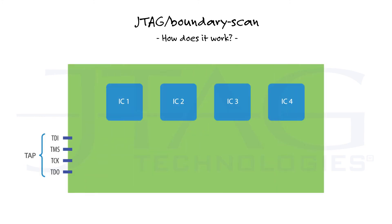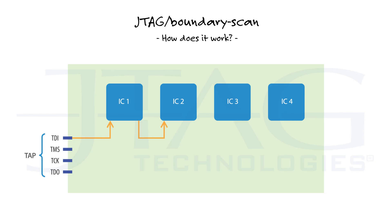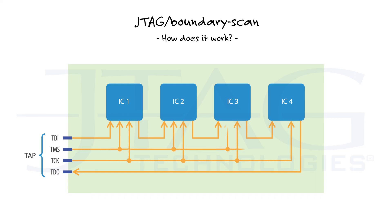Boundary scan registers of multiple devices on a board can be connected in series by connecting the TDO of one device to the TDI of the next device. TCK and TMS are connected to all devices in parallel. This results in a boundary scan chain on the board, with a single TAP for the entire chain.